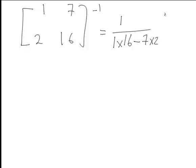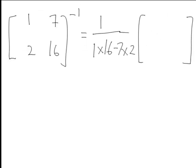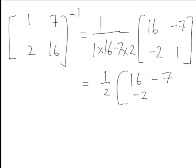And then the associated matrix part of this is then 16, 1 with those elements swapping places and the 7 and the 2 change sign to give negative 7, negative 2. And this just becomes a half times 16, negative 7, negative 2, 1.